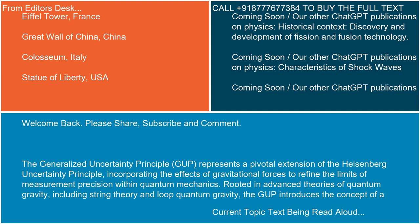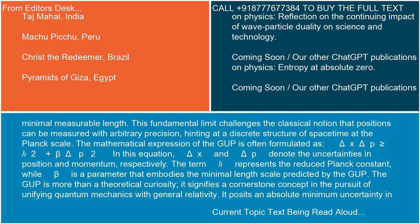Chemical bonding is a fundamental concept in chemistry, describing how atoms combine to form compounds. It involves the interaction of electrons from each atom, resulting in the formation of strong forces that hold the atoms together. There are two primary types of chemical bonds: ionic and covalent.